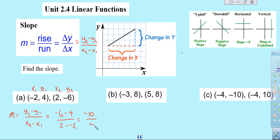That would give you negative 10 over 4, which would simplify to a negative 5 over 2.